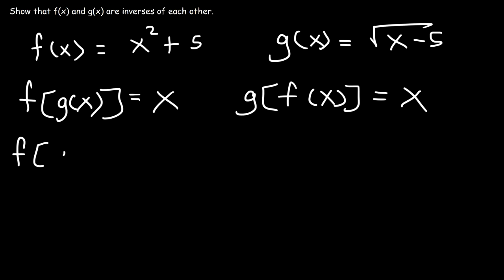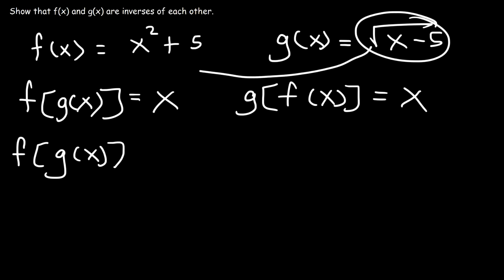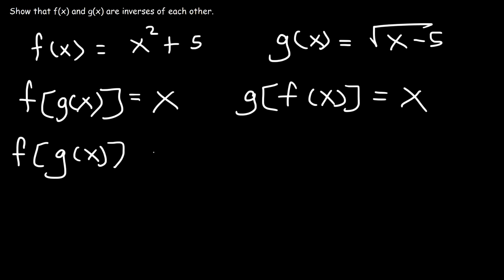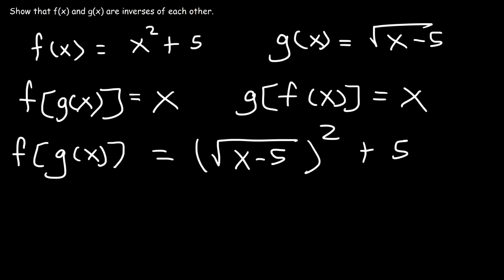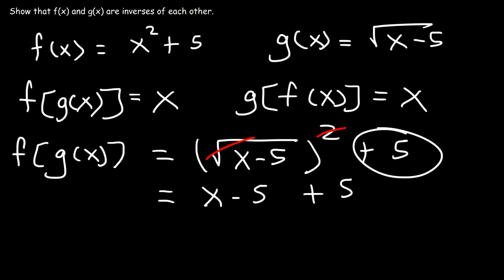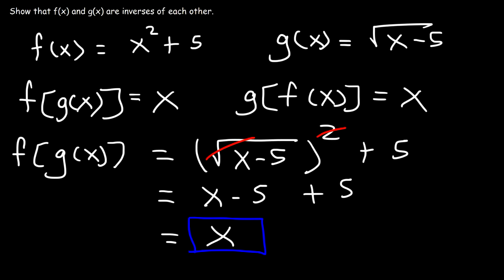Let's say that f(x) = x² + 5 and g(x) = √(x − 5). Are these two functions inverses of each other? First, let's determine f(g(x)). G is on the inside of f, so we replace x with √(x − 5). Normally f is x² + 5, so we get (√(x − 5))² + 5. The square and square root cancel, giving x − 5, and then adding 5 gives x. So f(g(x)) = x.